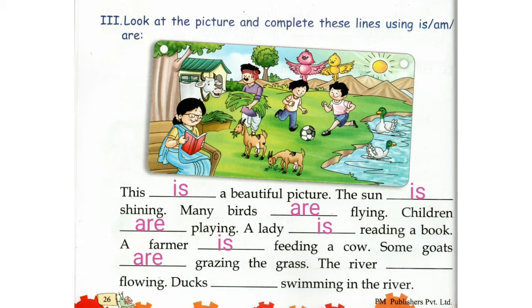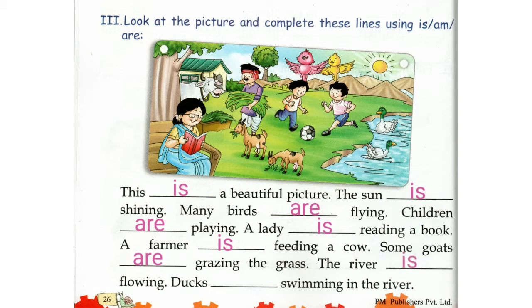The river. Children, we see only one river. So we will use Is. The river is flowing.